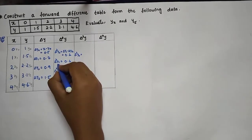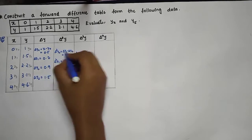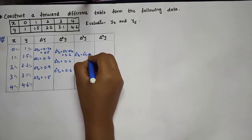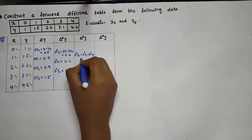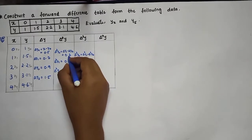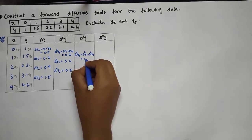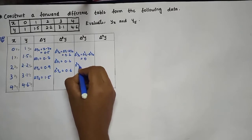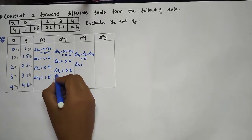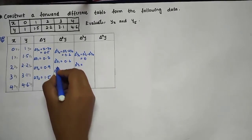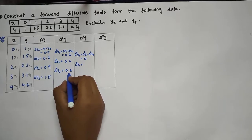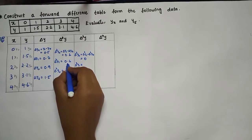Now move to the third difference, Δ³y. Δ³y₀ = Δ²y₁ − Δ²y₀ = 0.2 − 0.2 = 0. Δ³y₁ = Δ²y₂ − Δ²y₁ = 0.6 − 0.2 = 0.4.